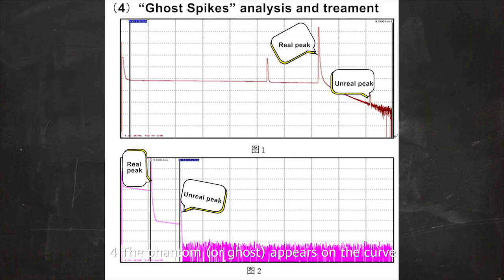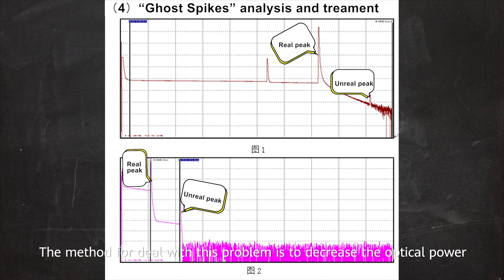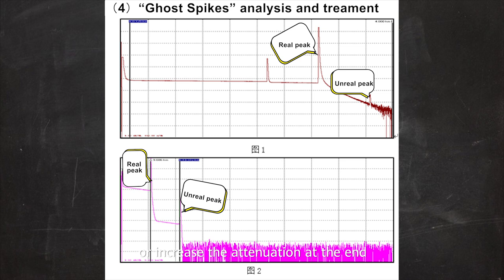4. The phantom or ghost appears on the curve because the measured optical fiber is short or there are multiple mechanical connectors on the link that are close to each other. The method for dealing with this problem is to decrease the optical power or increase the attenuation at the end.